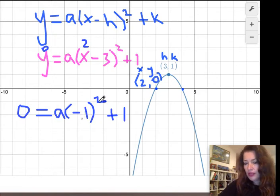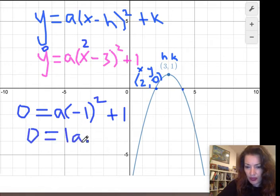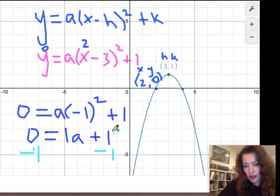Negative 1 squared is just 1, so I can rewrite this as 1a plus 1. And then now you can see we can solve for a by just subtracting 1 from both sides of the equation. If we subtract 1 on both sides, this here cancels out.